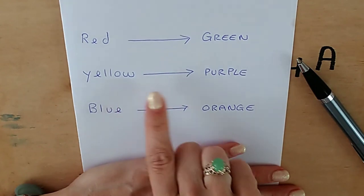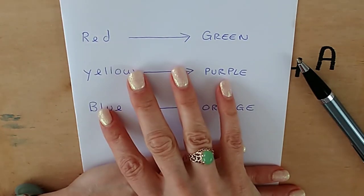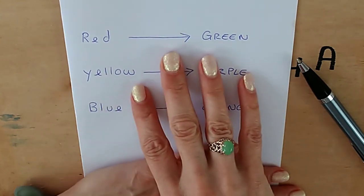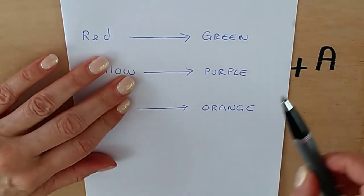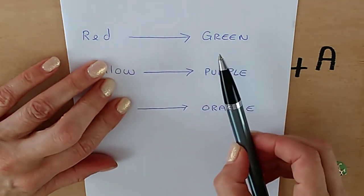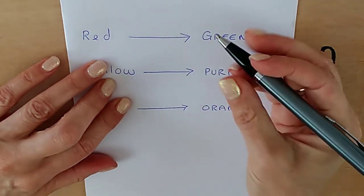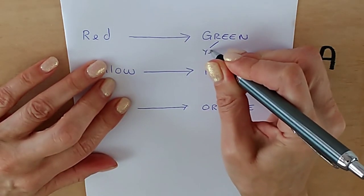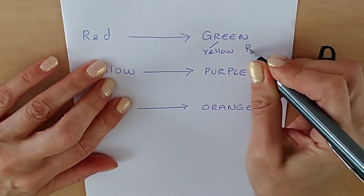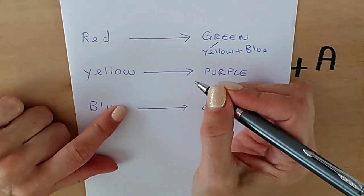Within each of these sets, we have something interesting going on because within each of these sets are contained all three primary colors. So let me explain to you what I mean. And the fact that I've written red on this side and green on this side, it could be the other way around. It doesn't matter which way around they are. But we have here red. So what makes green? We have yellow and blue. So with our yellow, blue and red, we have the three primaries and it continues.